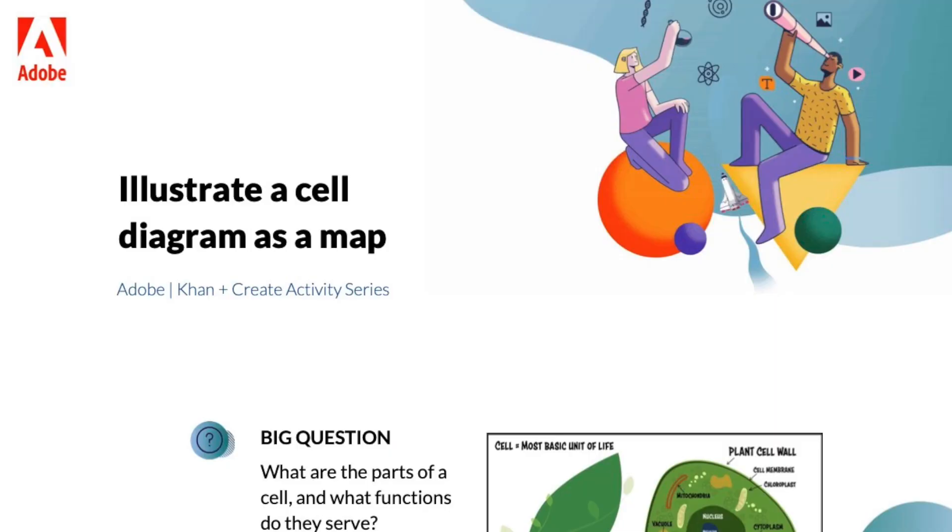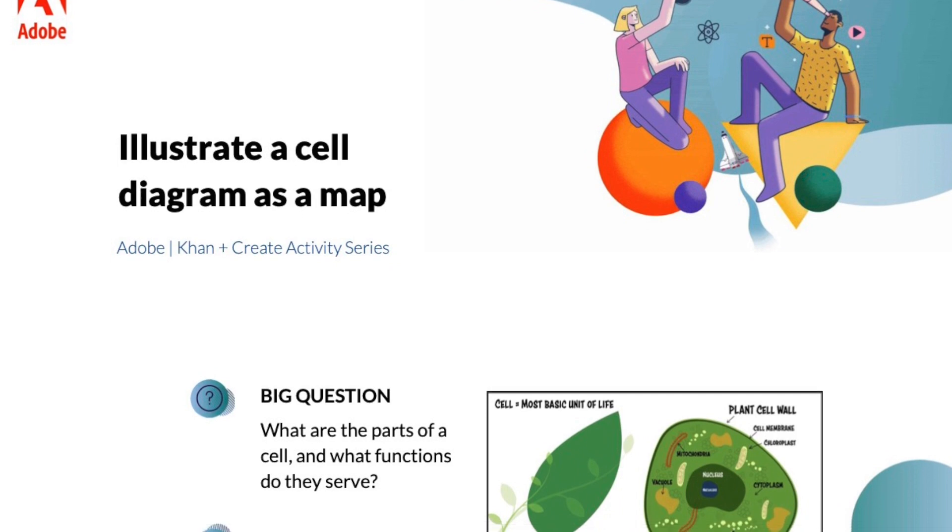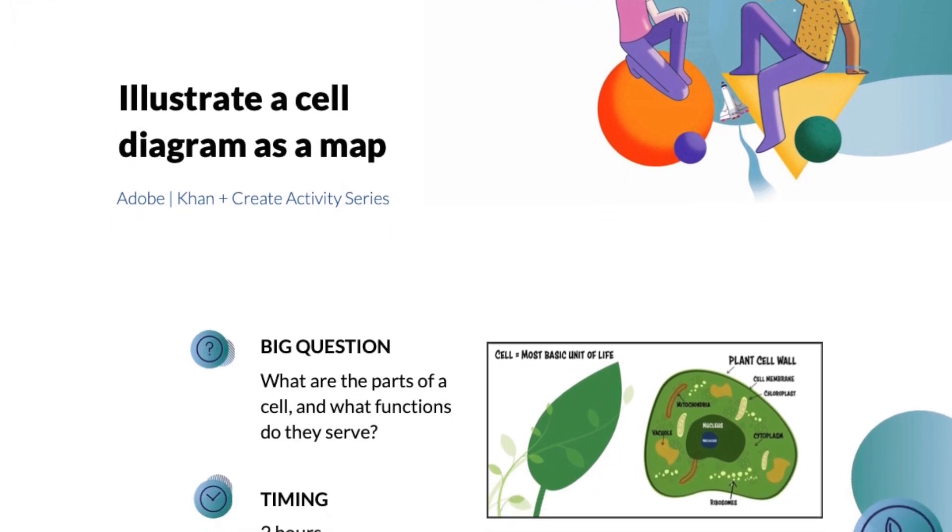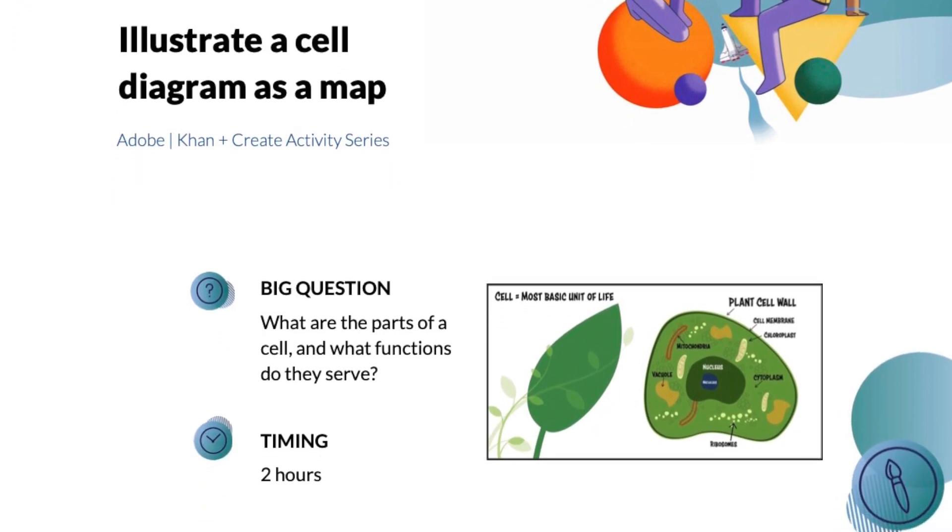In the resource Illustrated Cell Map, students start by engaging with some Khan Academy content on the parts of the cell. Then they use Adobe Illustrator and a sample template that we've prepared to create a kind of illustrated and aestheticized map of a cell.